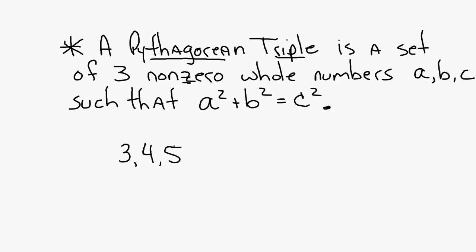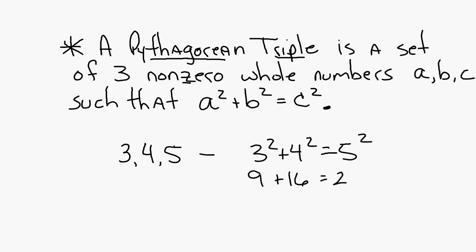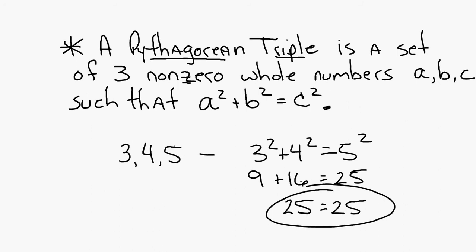Does 3 squared plus 4 squared equal 5 squared? Does 9 plus 16 equal 25? 9 plus 16 is 25, and 25 equals 25. So if the two smaller numbers squared and added together equal the third number squared, then yes, they are a Pythagorean triple. Everything's got to be a whole number — the two smaller ones squared and added together need to equal the third one squared.